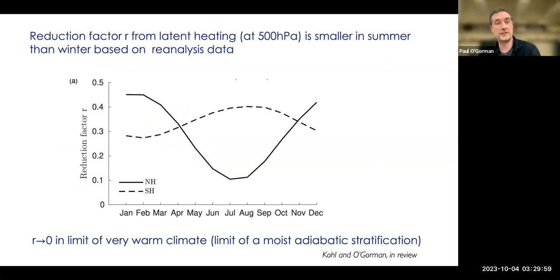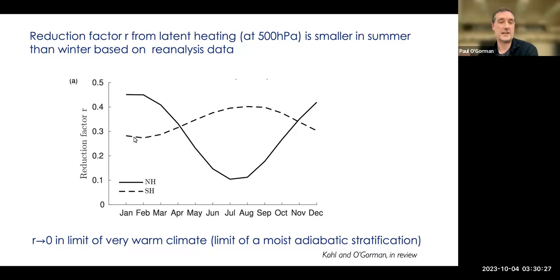From the analysis, omega has to be between zero and one. In the northern hemisphere, it's maybe 0.45 in winter and gets down to about 0.1 in summer. The southern hemisphere has a smaller seasonal cycle, but omega is also lower in summer. In general, summer is hotter, more water vapor, more latent heating — so we expect omega to be lower. If you go to a very warm climate in mid-latitudes, you approach the limit of moist adiabatic stratification, which is the omega-tends-to-zero limit. So the omega-tends-to-zero limit is quite interesting both for summer in the current climate and for thinking about climate change to a warmer climate.